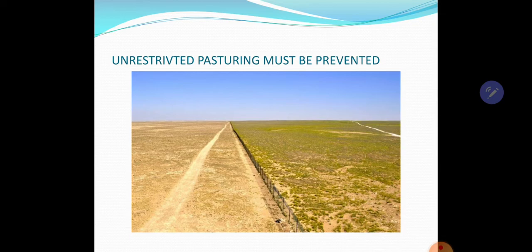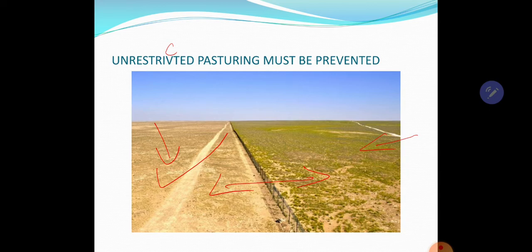Next, unrestricted pasturing must be prevented. You can see this land — there was no control of pasturing here, so it has become barren. But here there was a ban on grazing, and because of that it has retained the green cover. When winds or flowing water flow from the barren area, it will be eroded faster. So there should be planned pasturing or planned grazing.